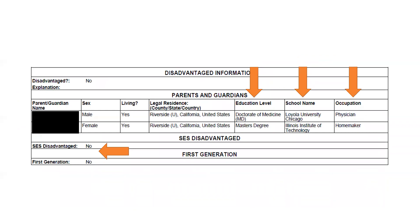Here's an example of a parent grid where the student said no to disadvantaged. Their parents' education levels are doctorate and master's, with the schools they graduated from and their current occupations listed. This gives you an idea of how the system determines whether to pull this information and list someone as SES disadvantaged, and whether or not they indicate they're a first-generation student.